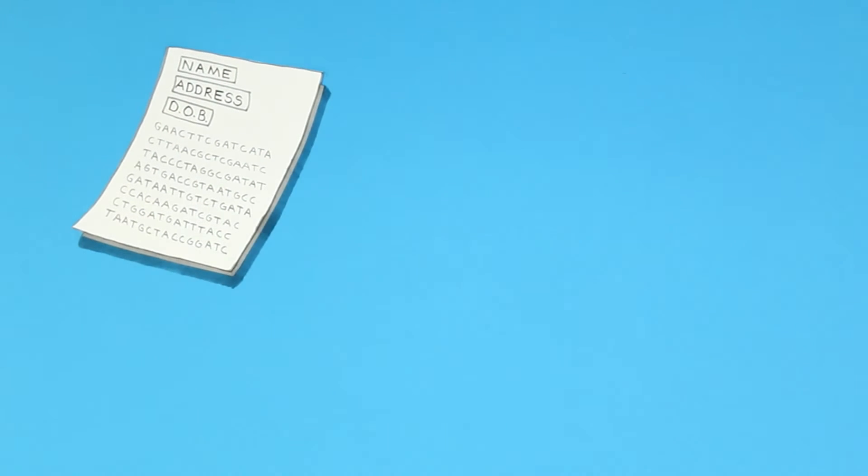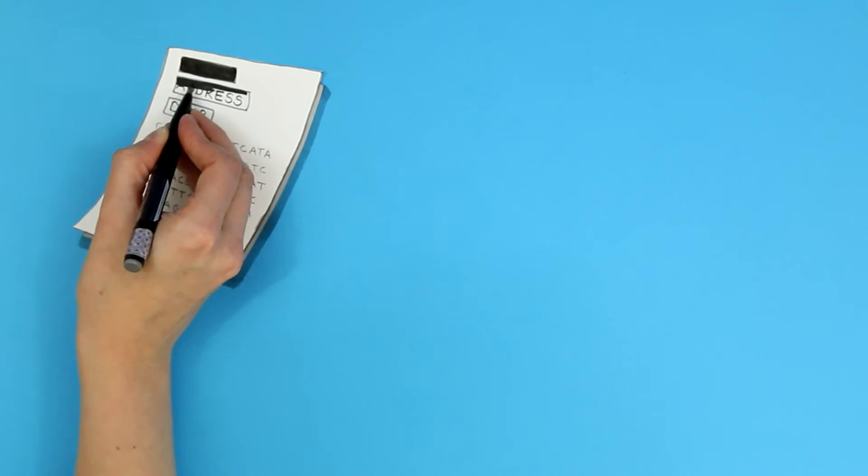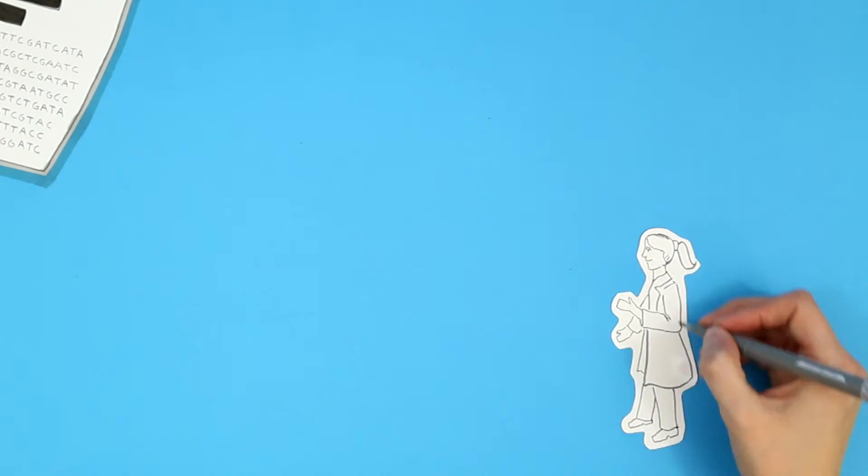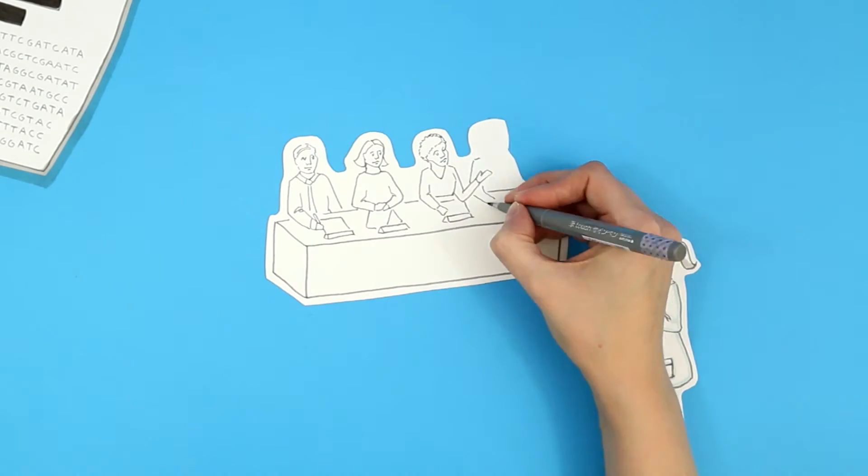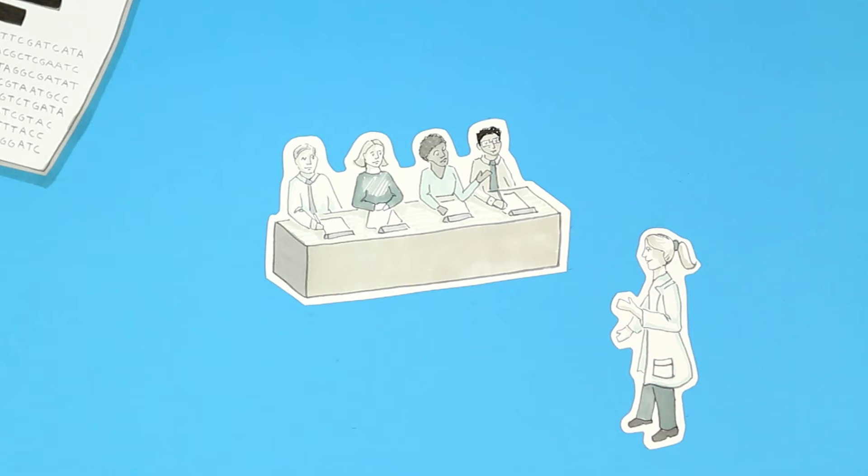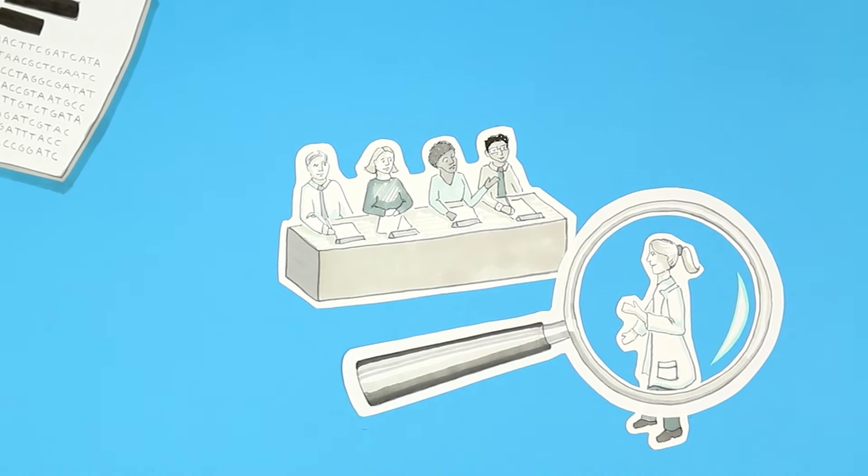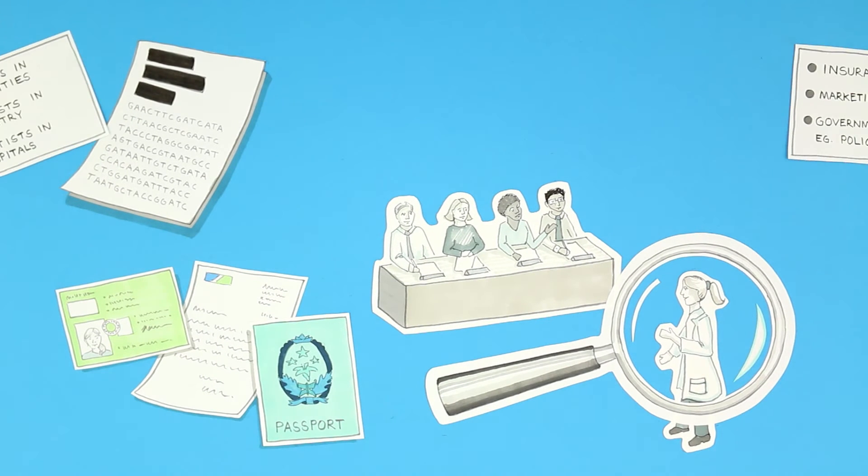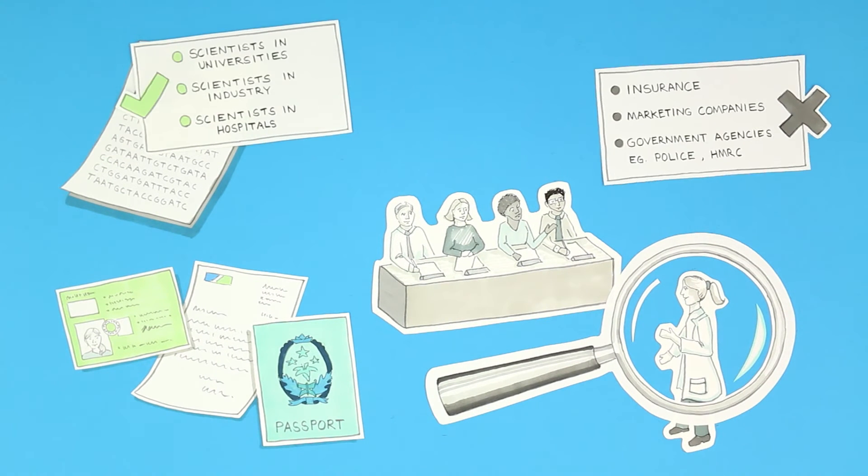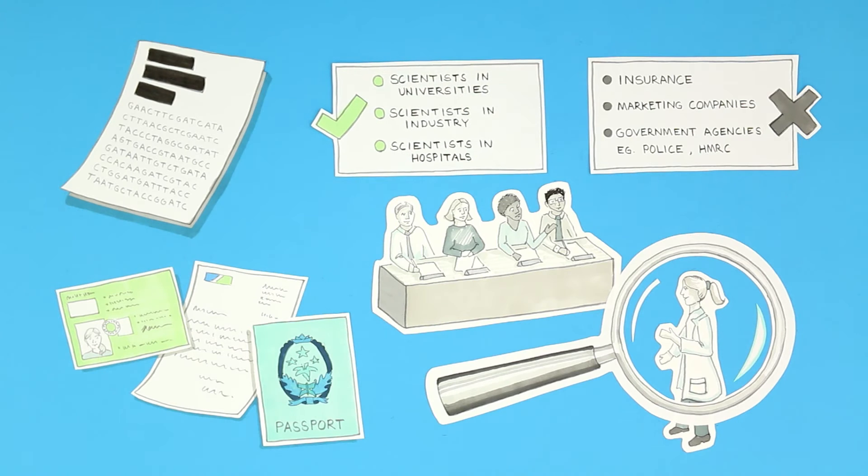Before we let research scientists look at this data, we remove anything that might directly identify you. Scientists have to tell an independent access review committee exactly how they want to use the data and why. They look at their request very carefully. And we check the applicants out. It can only be for health and we only let them look at the research data they need.